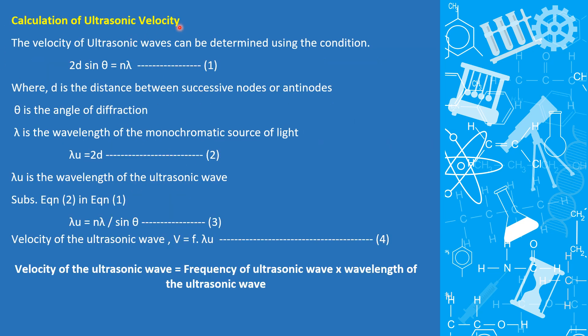Calculation of ultrasonic velocity: The velocity of ultrasonic wave can be determined using the condition 2d sin θ = nλ, where d is the distance between successive nodes or antinodes, θ is the angle of diffraction, λ is the wavelength of the monochromatic source of light.